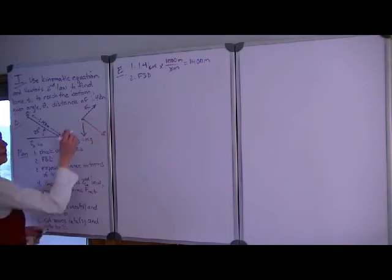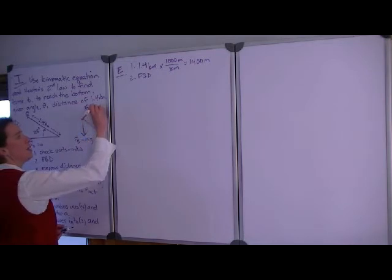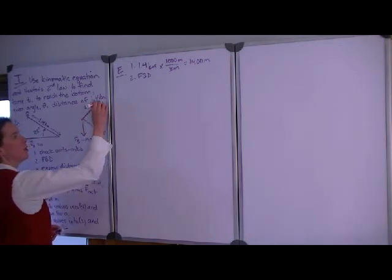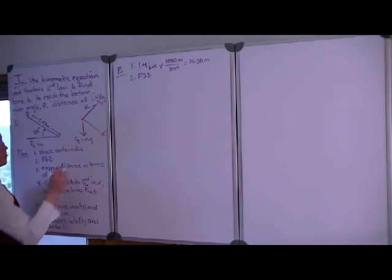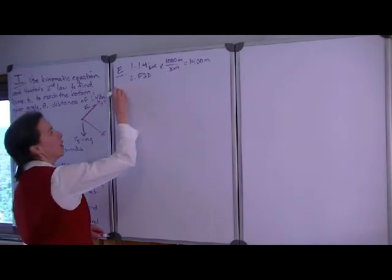So let's redraw our coordinate system so that x, positive x, is down the hill. In that case, positive y becomes parallel to the normal force. And so the only force that we will have to resolve in our equation of motion is the gravitational force.